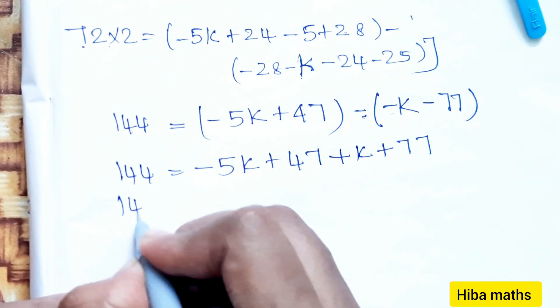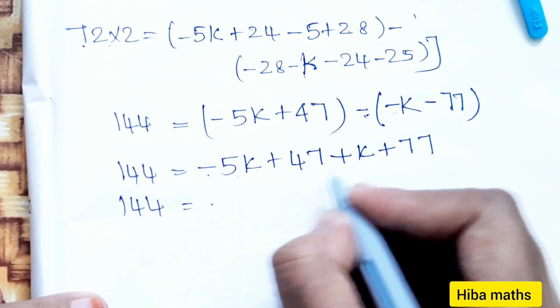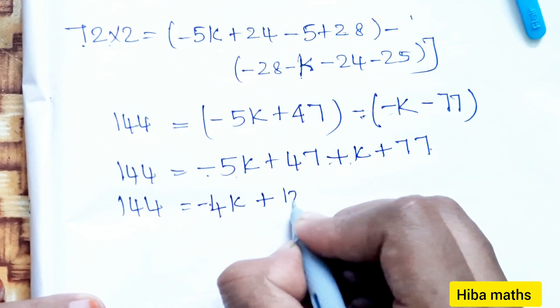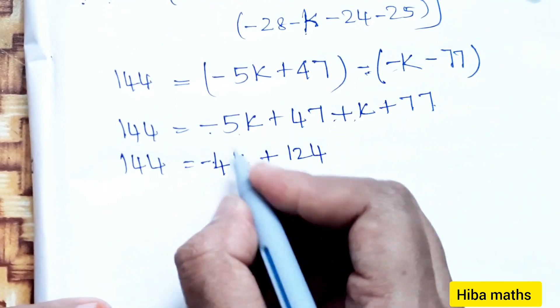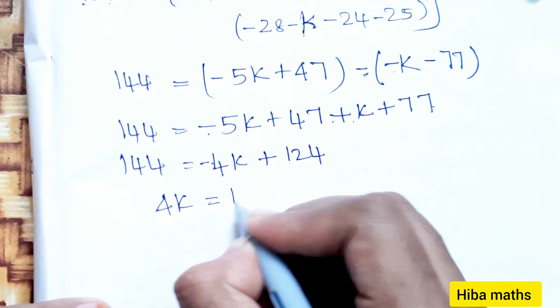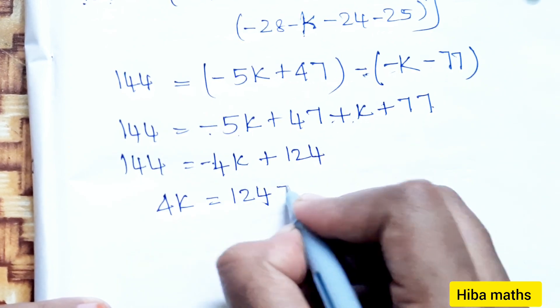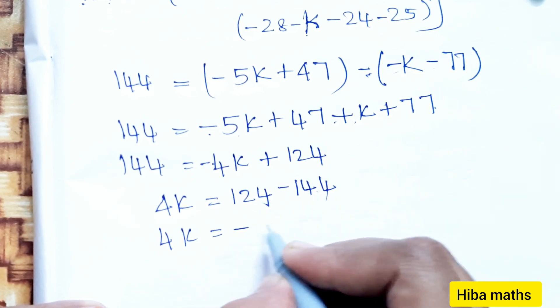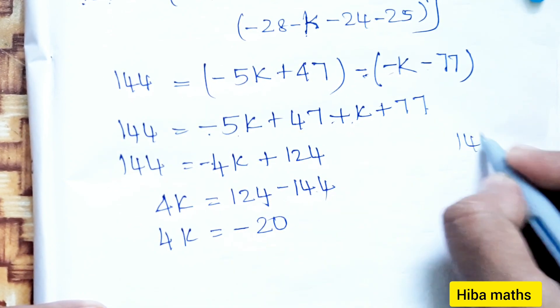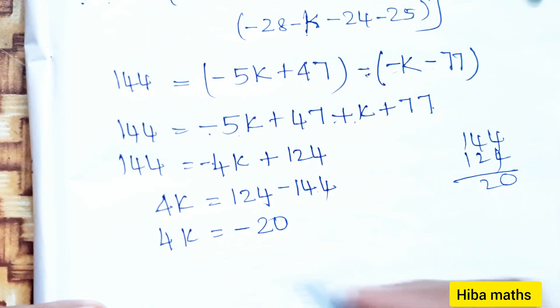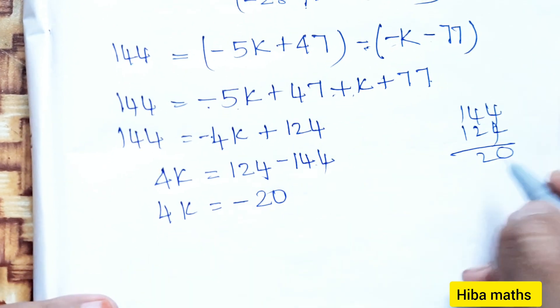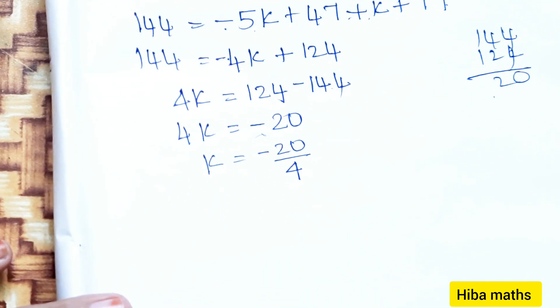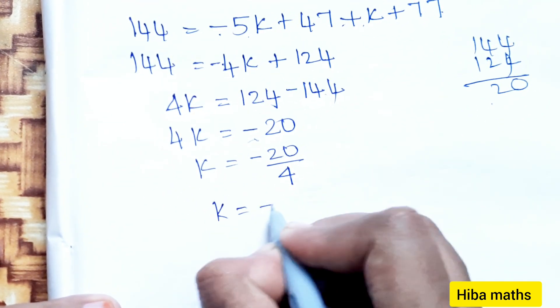144 equals -5K + K - 4K + 124. 4K equals -20, so K equals -20 by 4. Therefore K equals -5.